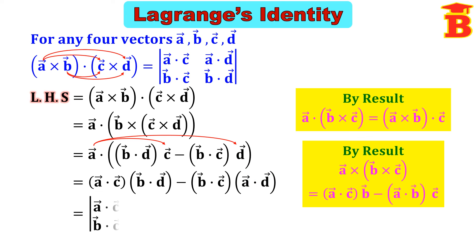Next, we take the right-hand side and write it here. The determinant expansion is: right multiply minus left multiply. Right multiply is (A·C)(B·D), minus left multiply is (B·C)(A·D). This matches exactly what we derived, so the left-hand side equals the right-hand side. This is the proof of Lagrange's identity. Thanks for watching.